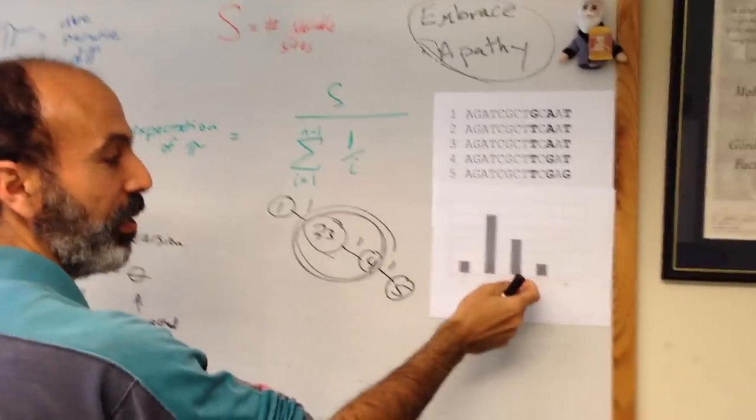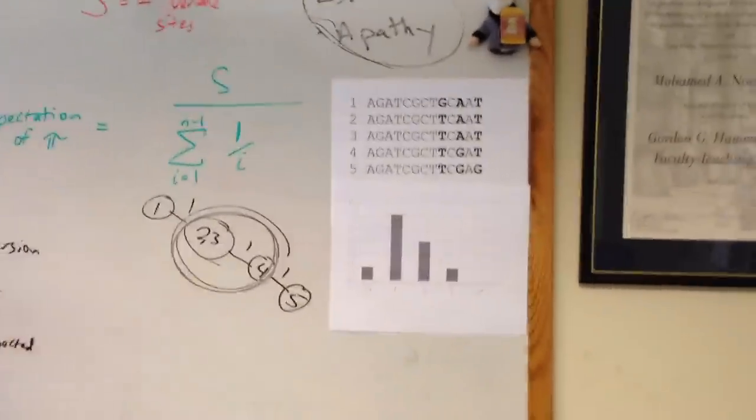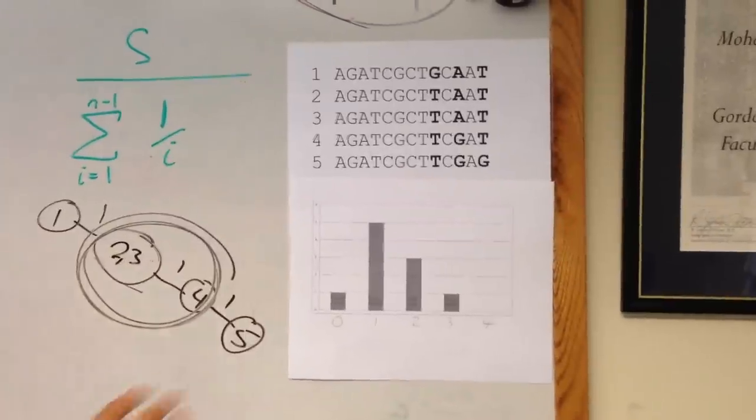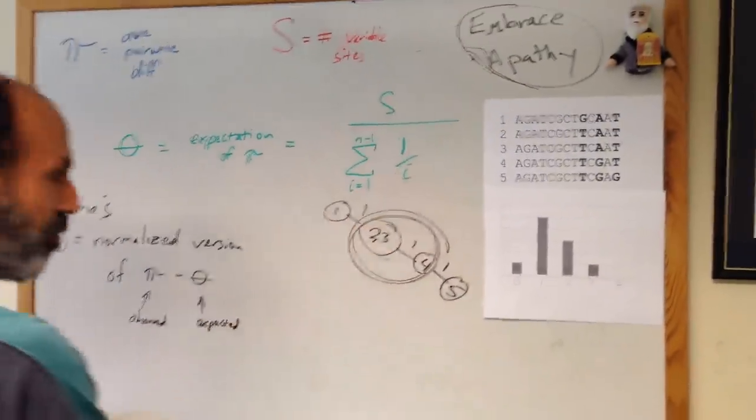The pi, the average pairwise difference, is probably something around 1.5. That's just the average of this distribution. This would be, for example, a neutrally evolving population.